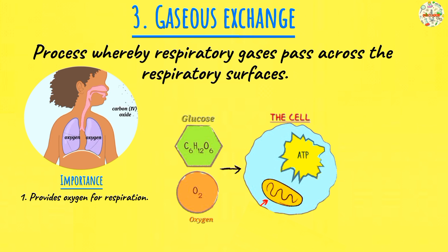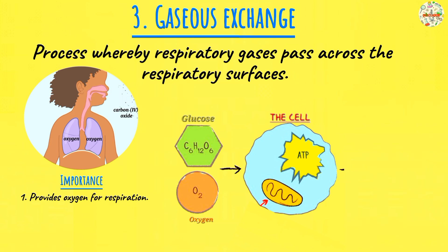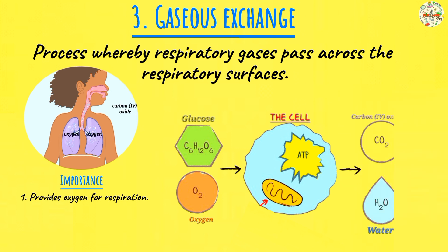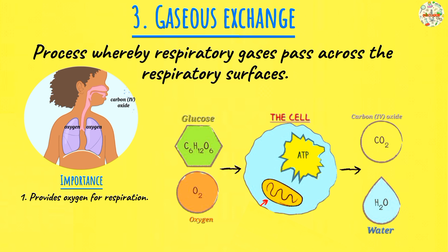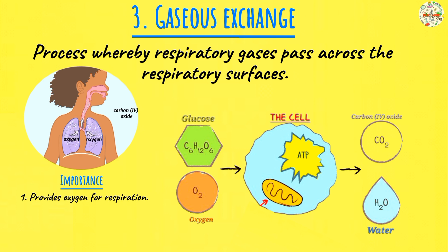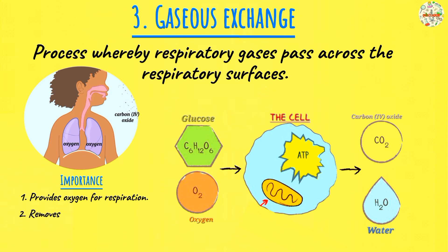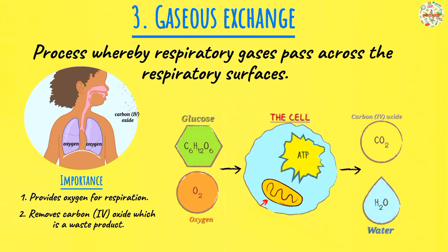Carbon dioxide is a waste product. It's produced in a lot of the reactions that take place within our body. Now because it's a waste product, it needs to be removed from our body, because if it's left to accumulate, it can become poisonous to the cells. So gaseous exchange is responsible for the removal of carbon dioxide from our body.